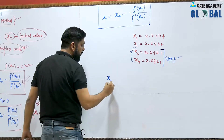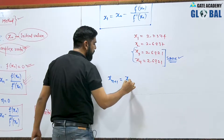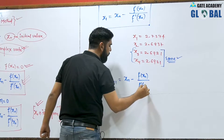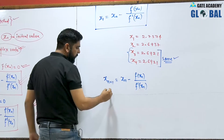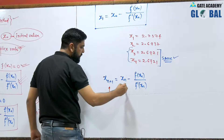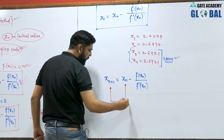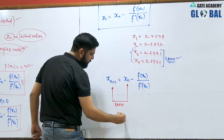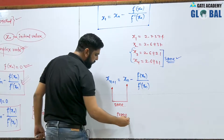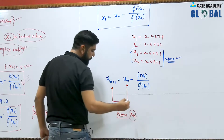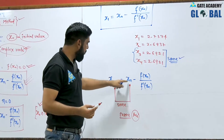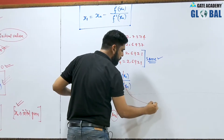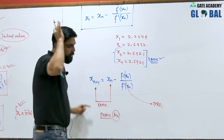Looking at the iterative formula x_(n+1) = x_n − f(x_n) / f'(x_n), when we get a successful answer the two consecutive values are exactly the same. This means f(x_n) / f'(x_n) must equal zero.